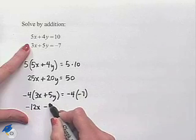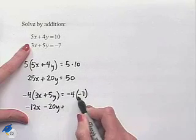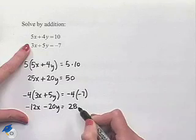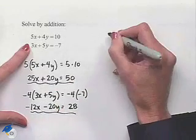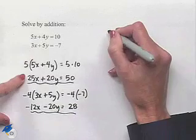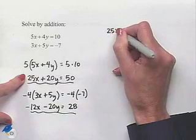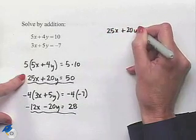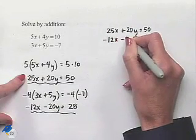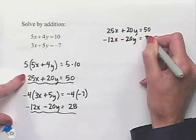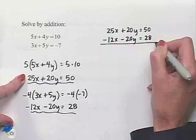We're now going to take each of the equations and write them on top of one another. We're going to have 25x + 20y = 50, written on top of -12x - 20y = 28. Now when we add the two equations together,